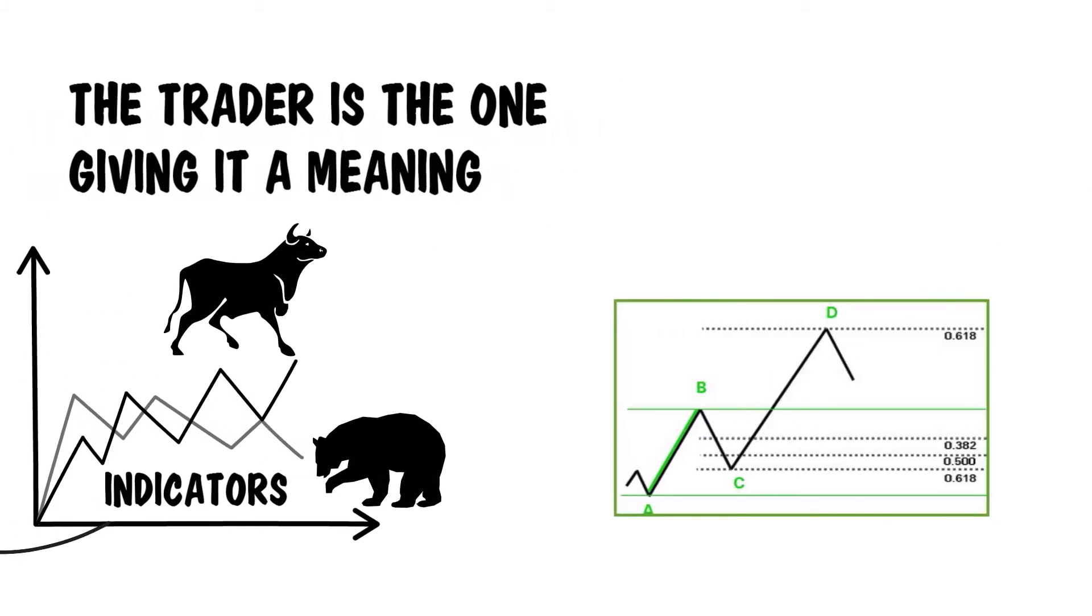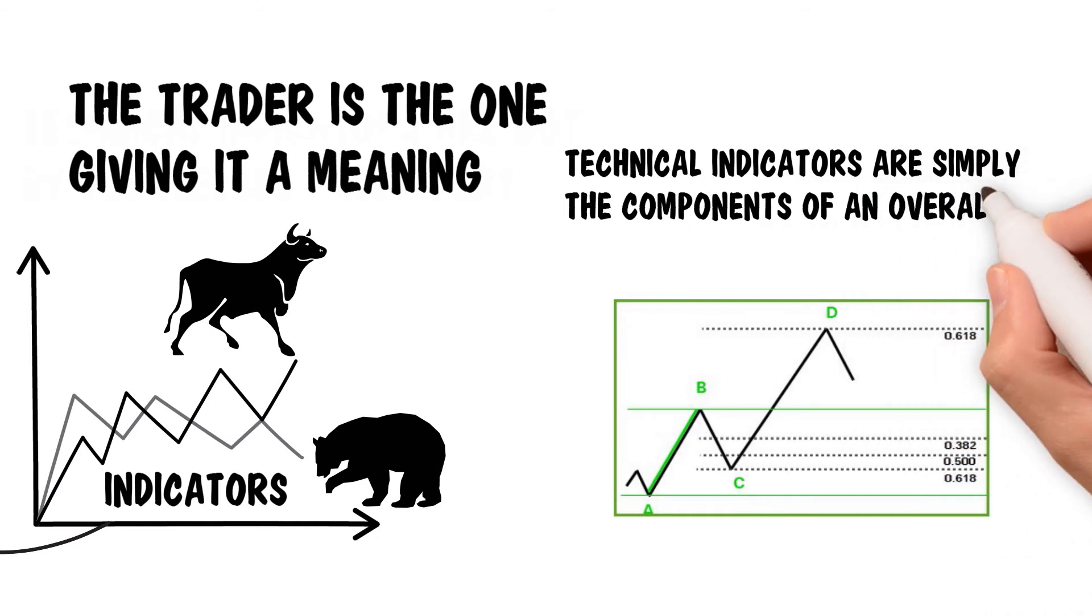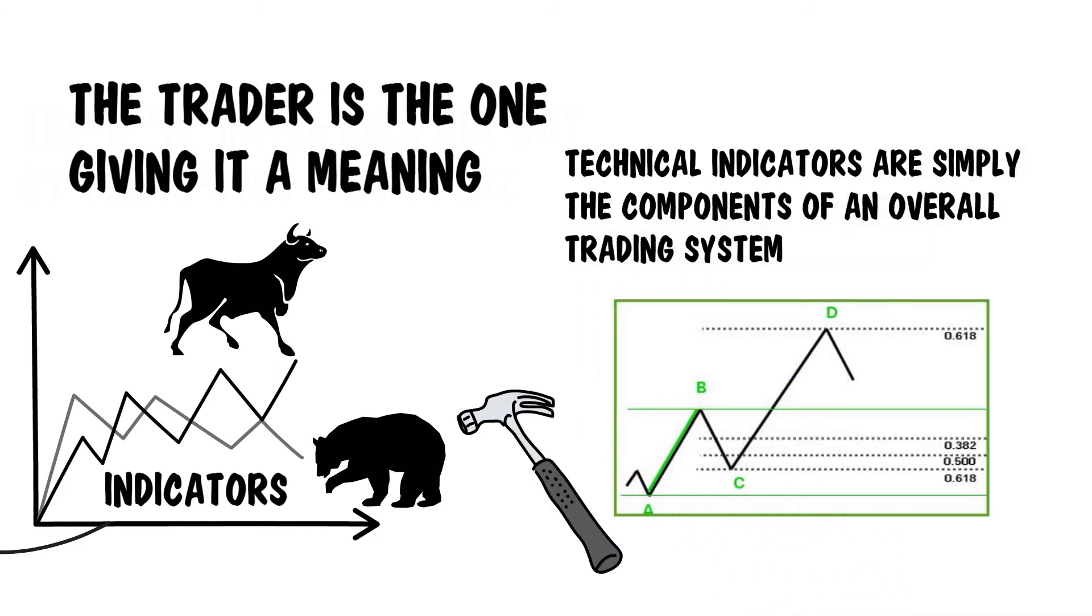Fibonacci levels hit their marks because we give them meaning and behave in the way that will make them come true. Technical indicators are simply the components of an overall trading system rather than being systems themselves. They are tools in the trader's toolkit.